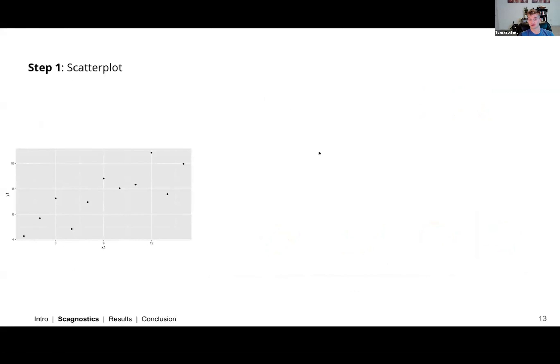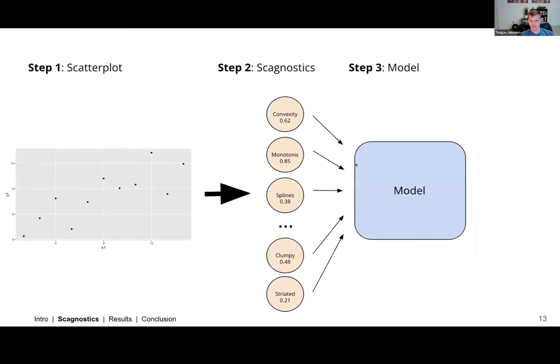So this is just a quick demonstration of how we use the scagnostics in our model. So here's a scatterplot that we have. We get the scagnostics from that scatterplot. And we have a bunch of these different scagnostics as values between zero and one. We use that as input to our model. And then our model, our trained model, spits out some measure of how linear it believes the scatterplot is.